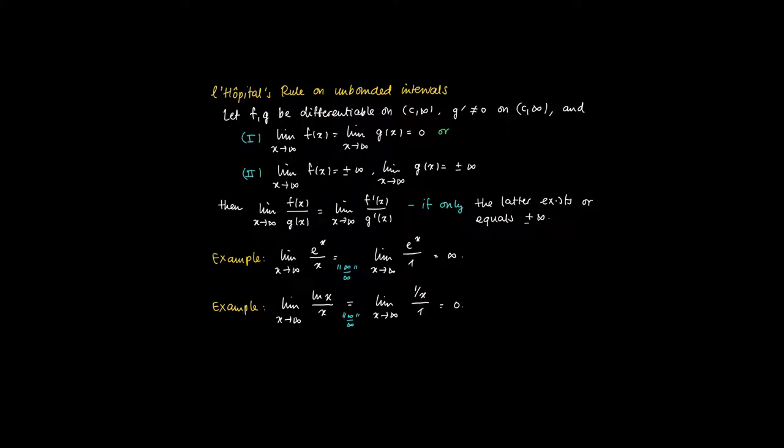So in this case, we show in the first example that e to the power x increases much faster than the function x, so that we get as a limit, we get infinity. And in the second example, we see that if we divide a logarithm by a polynomial of degree 1, that the polynomial of degree 1 increases much faster in the sense that ln(x) divided by x turns to 0.